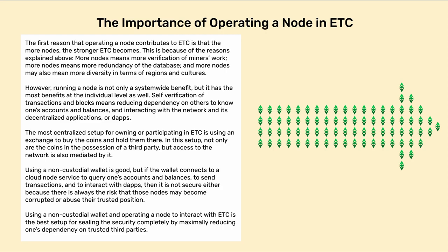Self-verification of transactions and blocks means reducing dependency on others to know one's accounts and balances, interacting with the network and its decentralized applications or dApps. The most centralized setup for owning or participating in ETC is using an exchange to buy the coins and hold them there — not only are the coins in the possession of a third party, but access to the network is also mediated by it. Using a non-custodial wallet is good, but if the wallet connects to a cloud node service to query one's accounts and balances, to send transactions and to interact with dApps, then it is not secure either because there is always the risk that those nodes may become corrupted or abuse their trusted position. Using a non-custodial wallet and operating a node to interact with ETC is the best setup for sealing the security completely by maximally reducing one's dependency on trusted third parties.